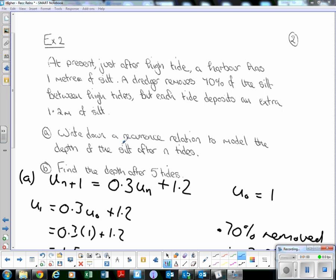So what's happening? The tide's coming in depositing some silt, then a dredger comes along and removes 70% of that silt. When the tide goes out and comes back in again, it deposits more silt. This is recurring time and time again, that's why it's a recurrence relation.